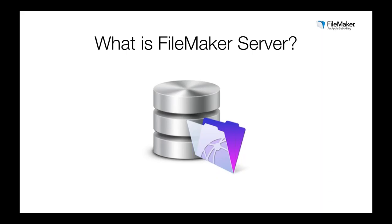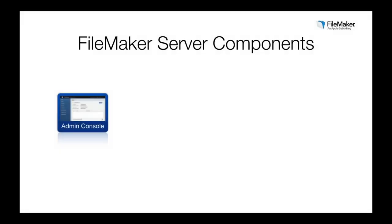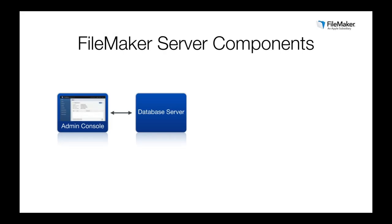This software gets installed on a dedicated computer — what we normally refer to as a server, which is a computer dedicated to providing services. FileMaker Server is not just one piece of software; it's composed of several different components that work together. The first is the Administrative Console — a web application that allows us to set up and configure FileMaker Server. Then we have the Database Server, which actually shares and makes our applications available to all users.